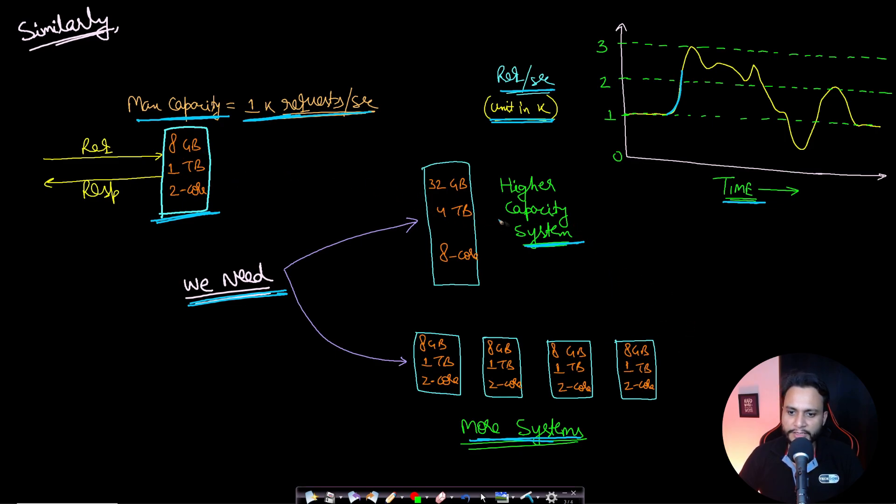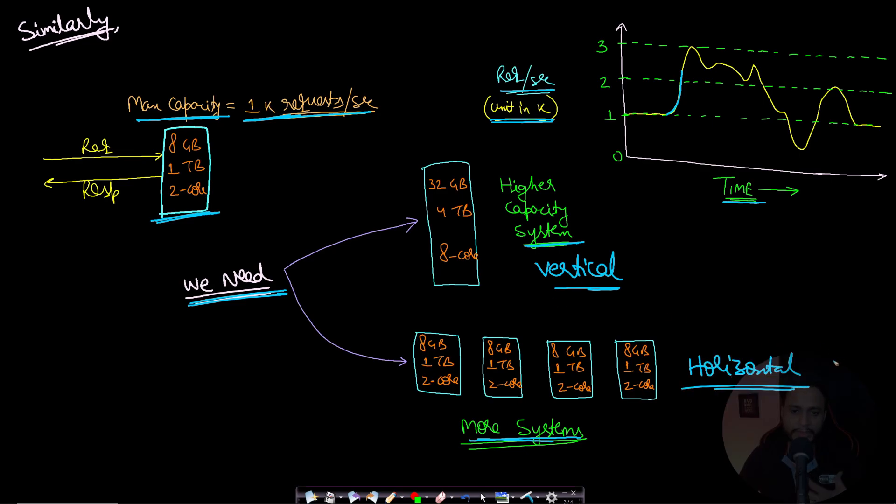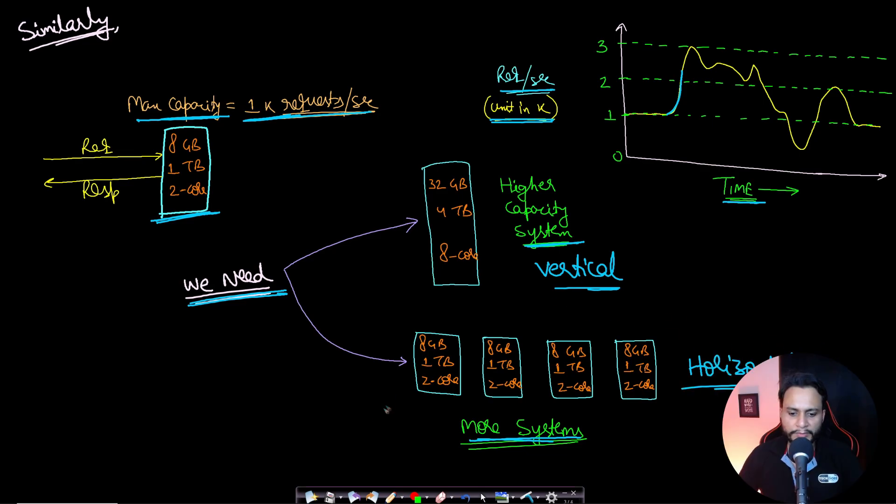If you are increasing the capacity of the system, this is known as vertical scaling. And if you add up more systems one after another, then this is known as horizontal scaling. We will discuss about it in a later video, but we must have understood that whenever you are increasing the capacity of your existing system, then you are actually scaling the system, that means you are scaling up.